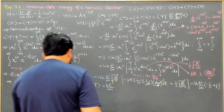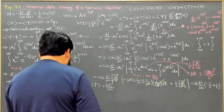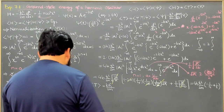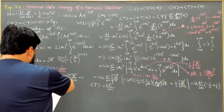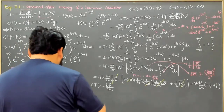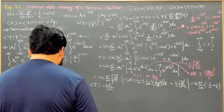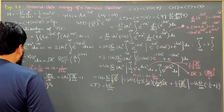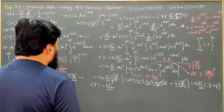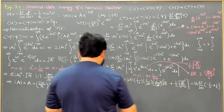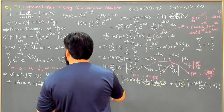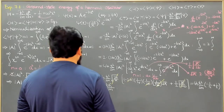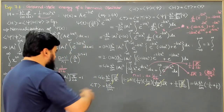So we have found the average value of T, and similarly we will find the average value of V as well. The average value of V is comparatively easier. So let me erase some of the things here, and then we will start with the average value of V.